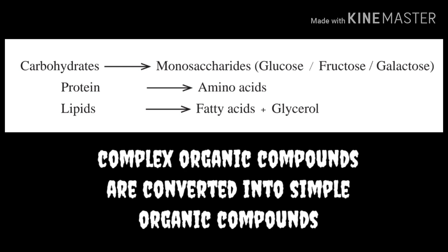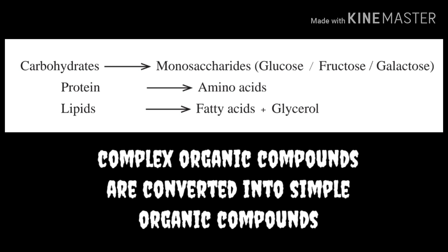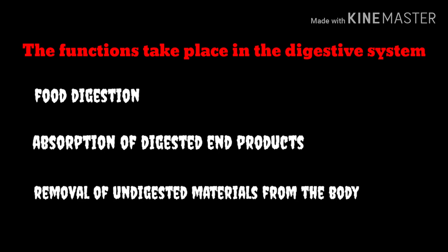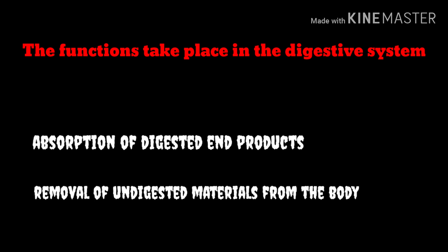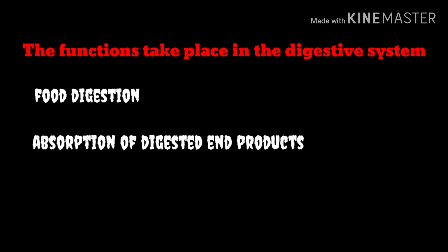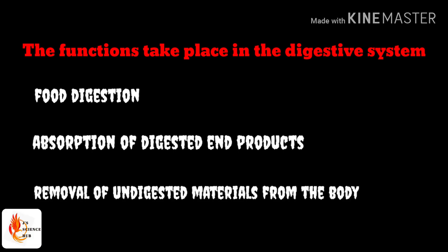So now we know the complex and simple structures of the biomolecules we consume as food. During digestion, the complex form of these biomolecules is converted into a simple form. There are three main important functions that take place in the digestive system: food digestion, absorption of digested products, and removal of undigested food materials from the body.